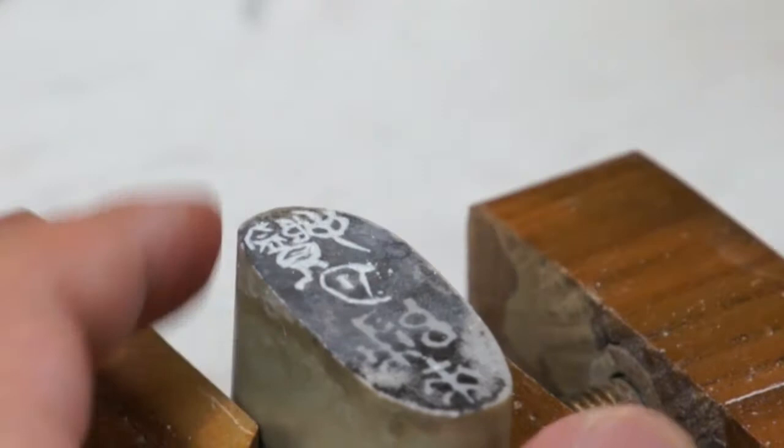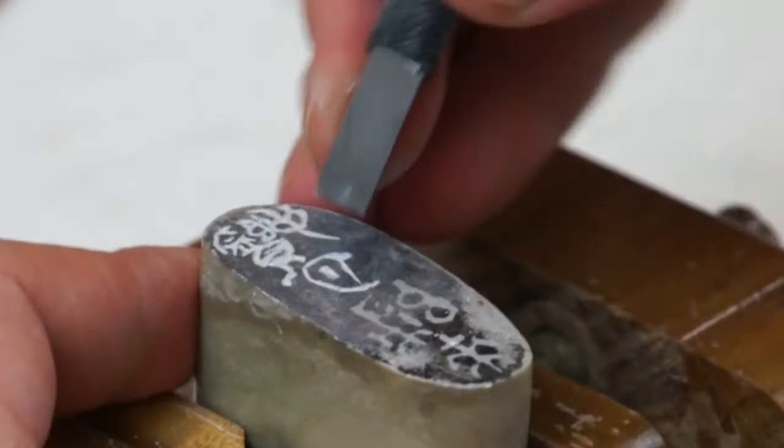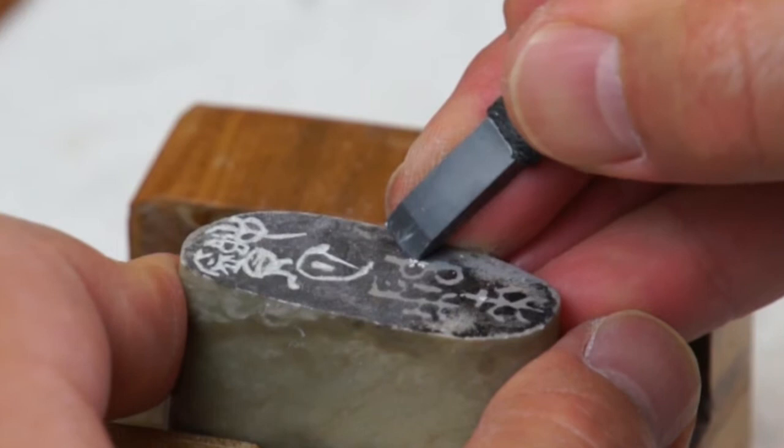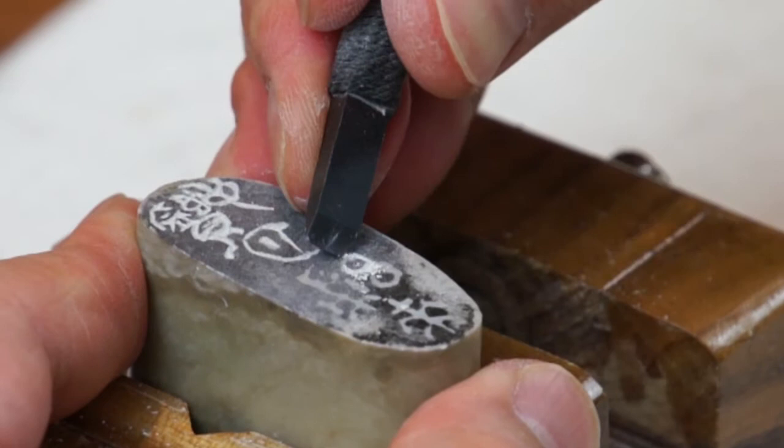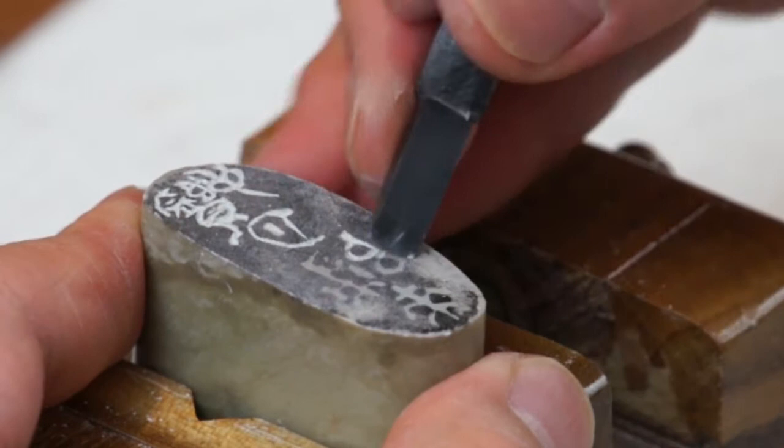And then return. This part is a radical, usually represents place. That's a Bu, it reads Bu actually in Chinese.